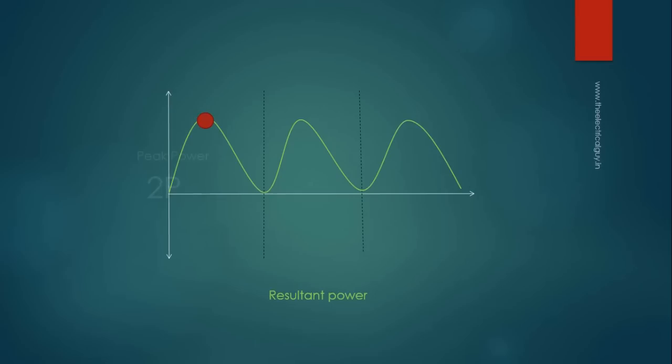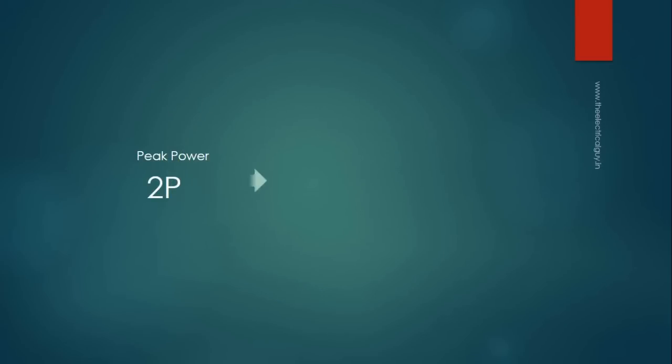The funny thing about single-phase power is that the average power is one half of its peak value. You can do the math and find that if peak power is 2p, then the average power is p only. And also the power output is not constant.